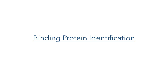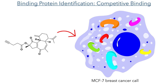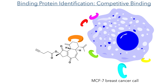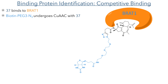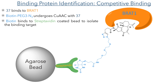With confirmation that these curcuzones can inhibit cell viability, the researchers then sought to identify the binding protein. To do this they administered probe compound 37 to MCF7 cancer cells and incubated them for four hours, after which the cells were lysed to release the intracellular contents. With compound 37 now binding to BRAT1, it could react with a biotinylated azide linker in a copper-promoted azide-alkyne click reaction. This biotin tag can bind to streptavidin coated on an agarose bead, allowing for the capture of the protein-bound probe.